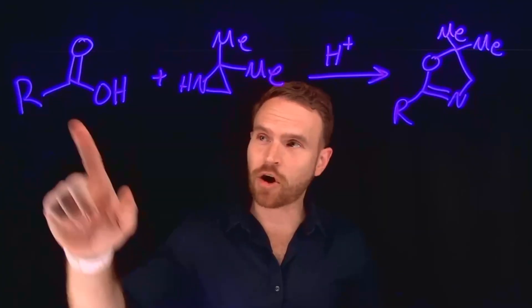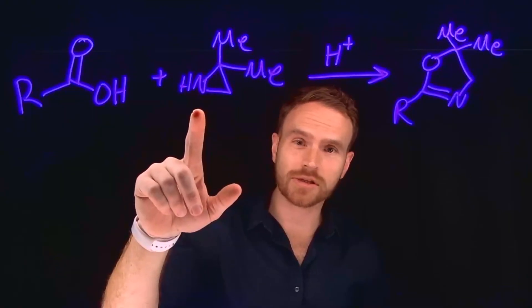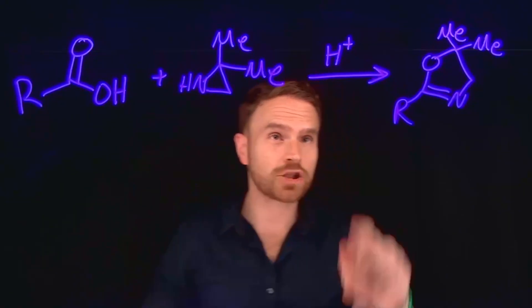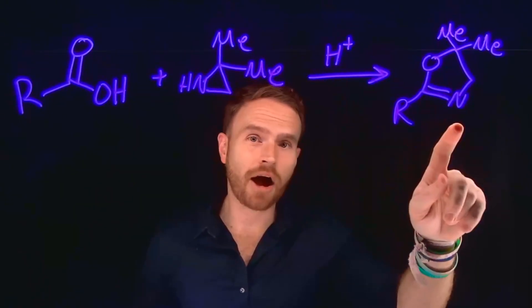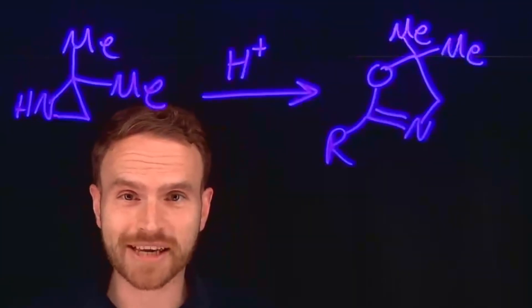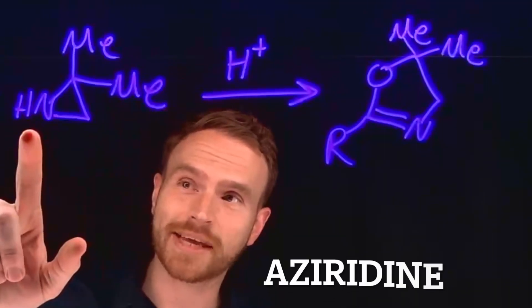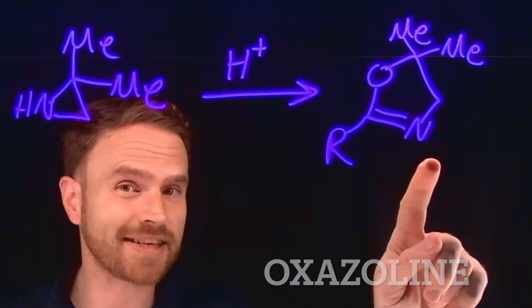In this reaction, we have a carboxylic acid reacting with what's known as an aziridine treated with an acid to make oxazoline. So these compounds, in case you've never seen them before, are what's known as an aziridine and an oxazoline.